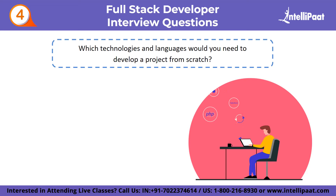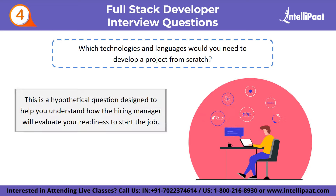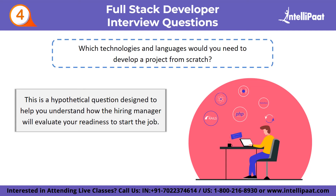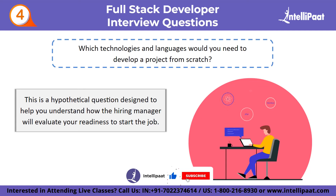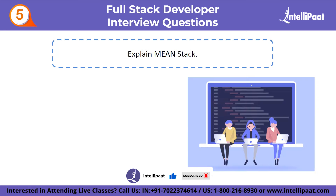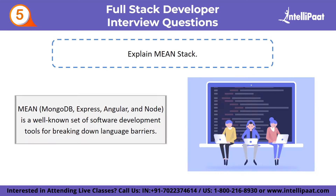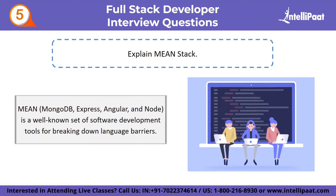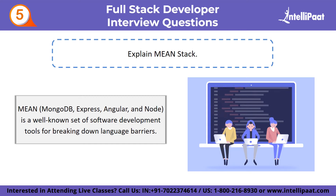Fourth intermediate question: which technologies and languages would you need to develop a project from scratch? This is a hypothetical question designed to help the hiring manager evaluate your readiness. It is a simple method for distinguishing a good full stack developer from a novice. Fifth question: explain the MEAN stack. MEAN — MongoDB, Express, Angular, and Node — is a well-known set of software development tools. A MEAN stack is built on MongoDB, a NoSQL data storage. The Express and Angular HTTP servers are used to build the JavaScript frontend.